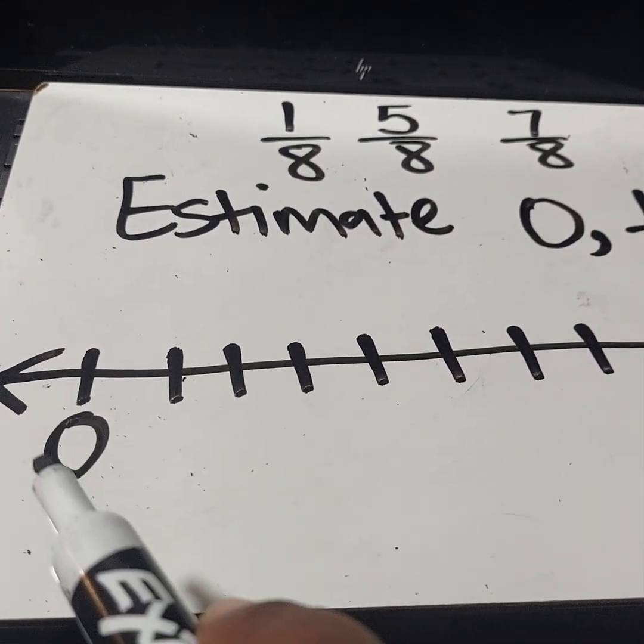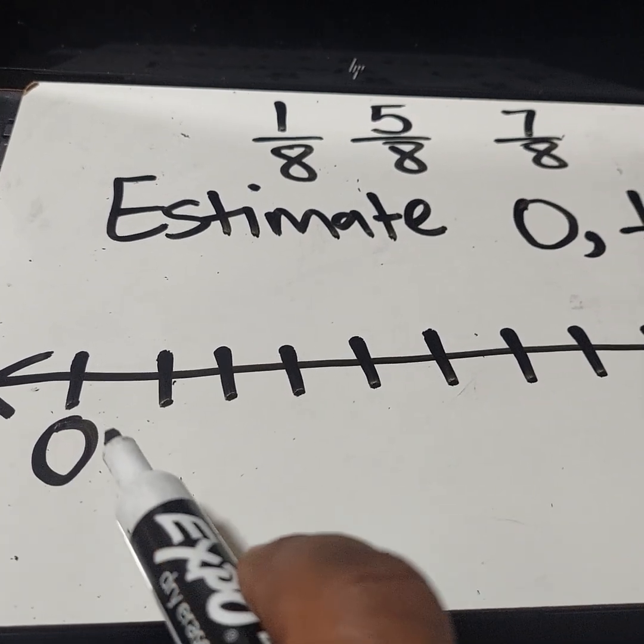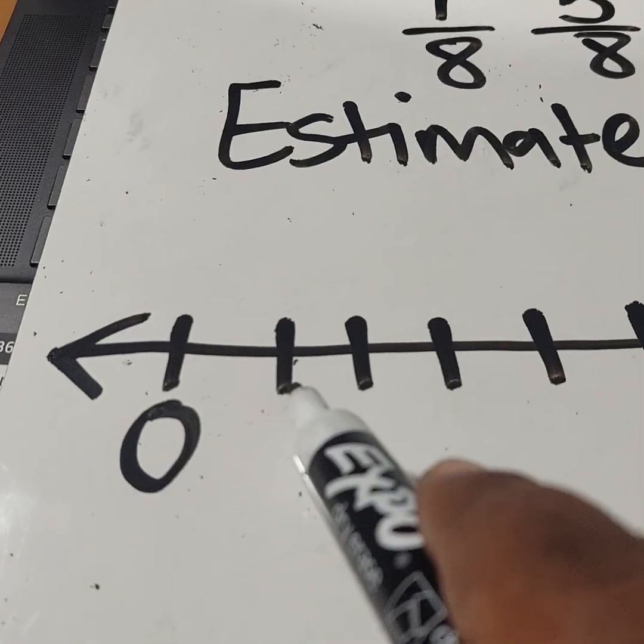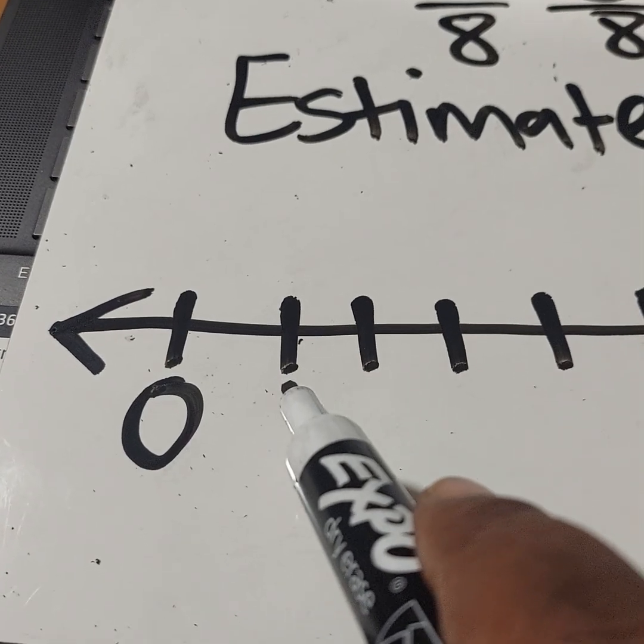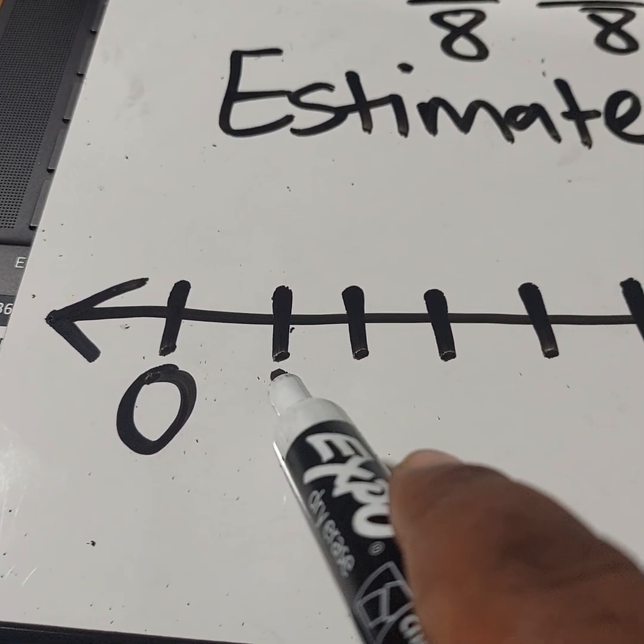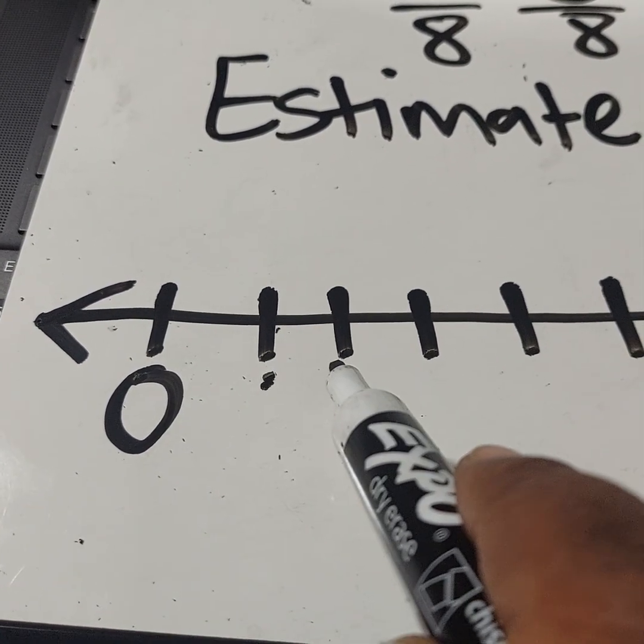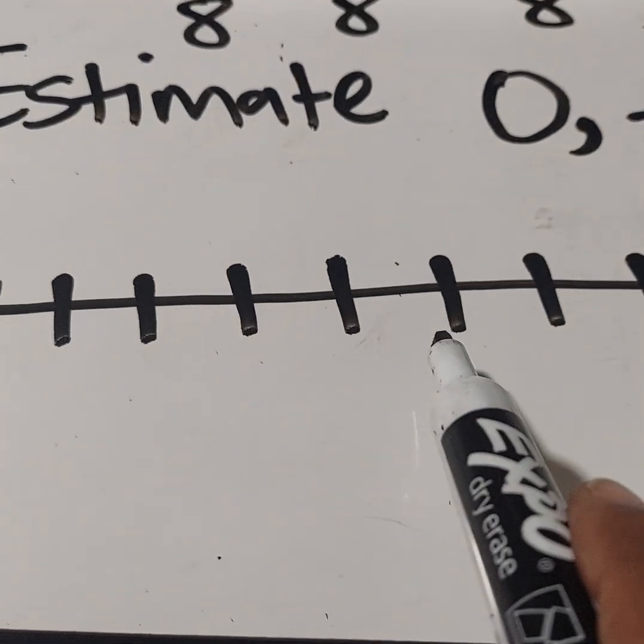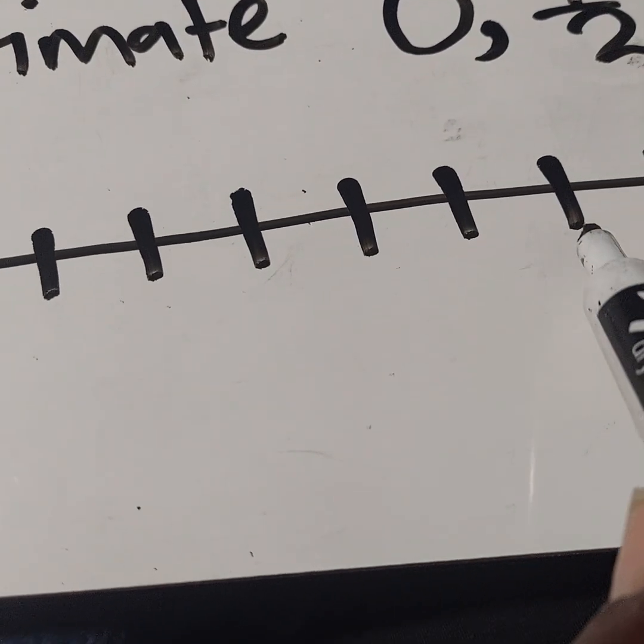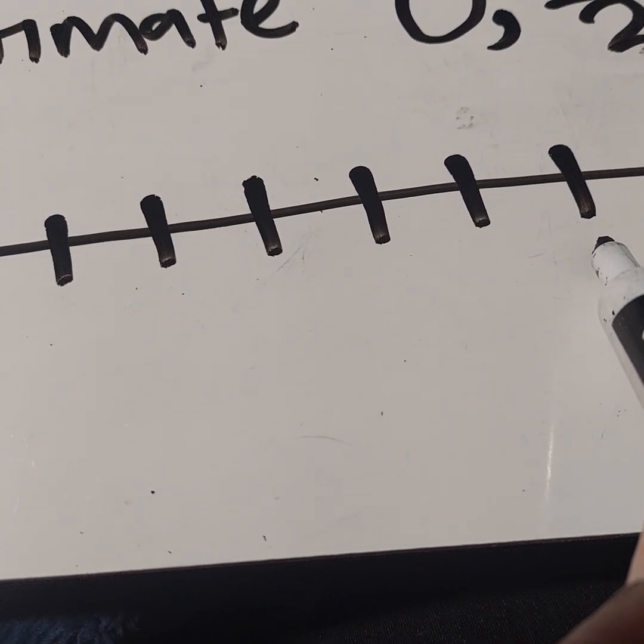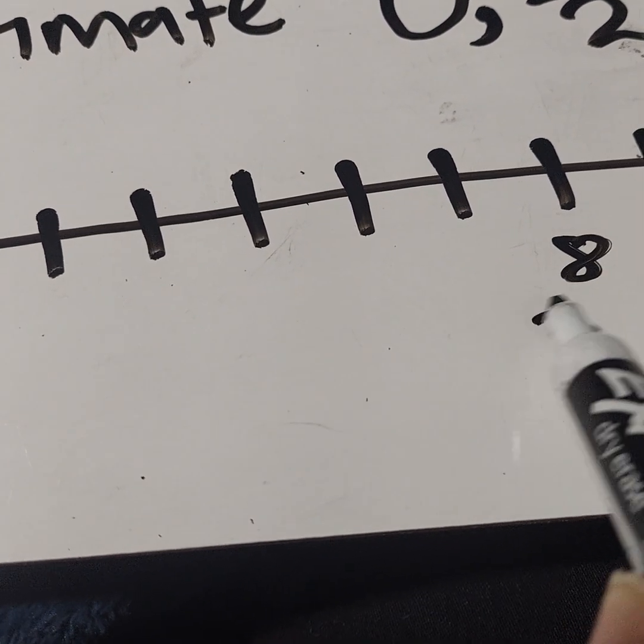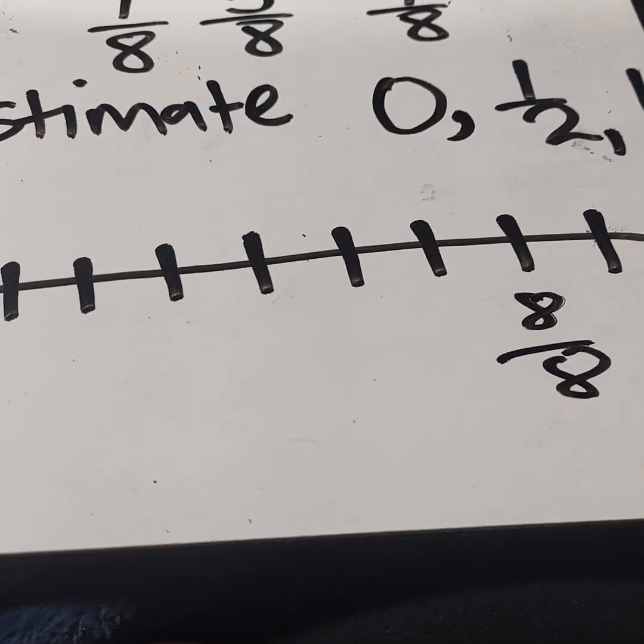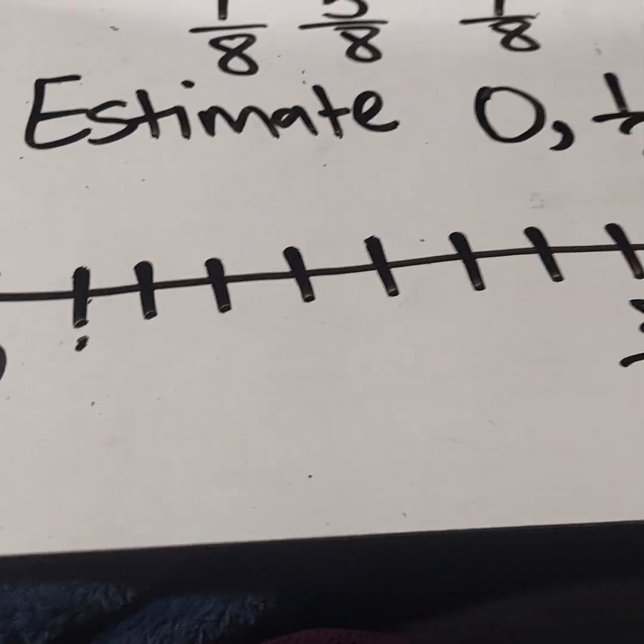So I'm going to say one, two, three, four, five, six, seven, eight. So I'm going to stop right here. I'm going to put eight out of eight right here because that represents one whole.